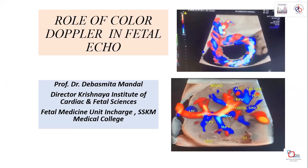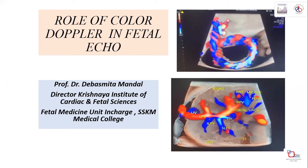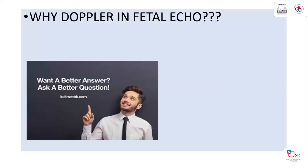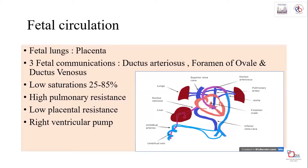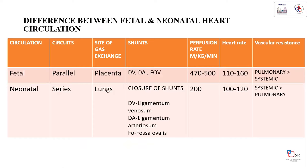This is a wonderful and colorful subject. The question should always be paired with a better answer - it's all about fetal lung and placenta supplications and their correlation. There are three fetal communications: ductus venosus, ductus arteriosus, and foramen ovale. Inside the fetus there is always low saturation, low placental supply, a high pulmonary resistance, and a dominant right ventricular pump.